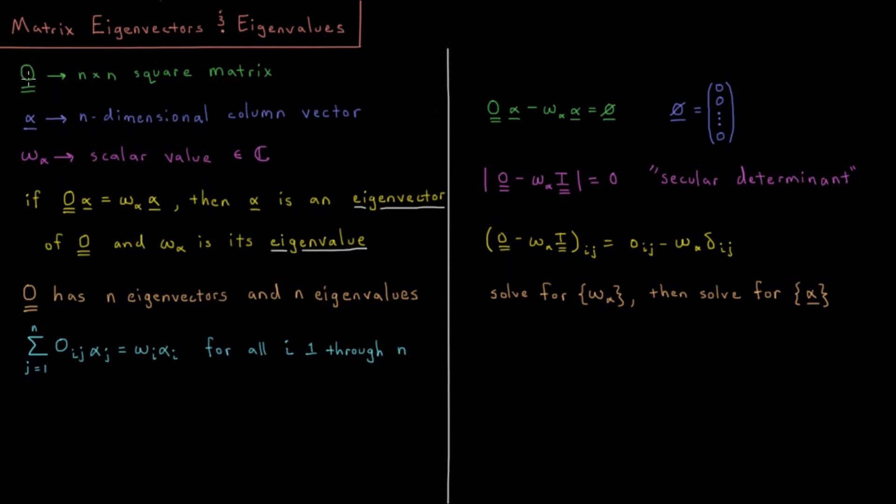A given matrix O, having n rows and n columns, is going to have n eigenvectors, each with their own eigenvalue. This means that we have a sum from j equals 1 to n for this matrix-vector multiplication: O_ij times alpha_j equals omega_i times alpha_i.